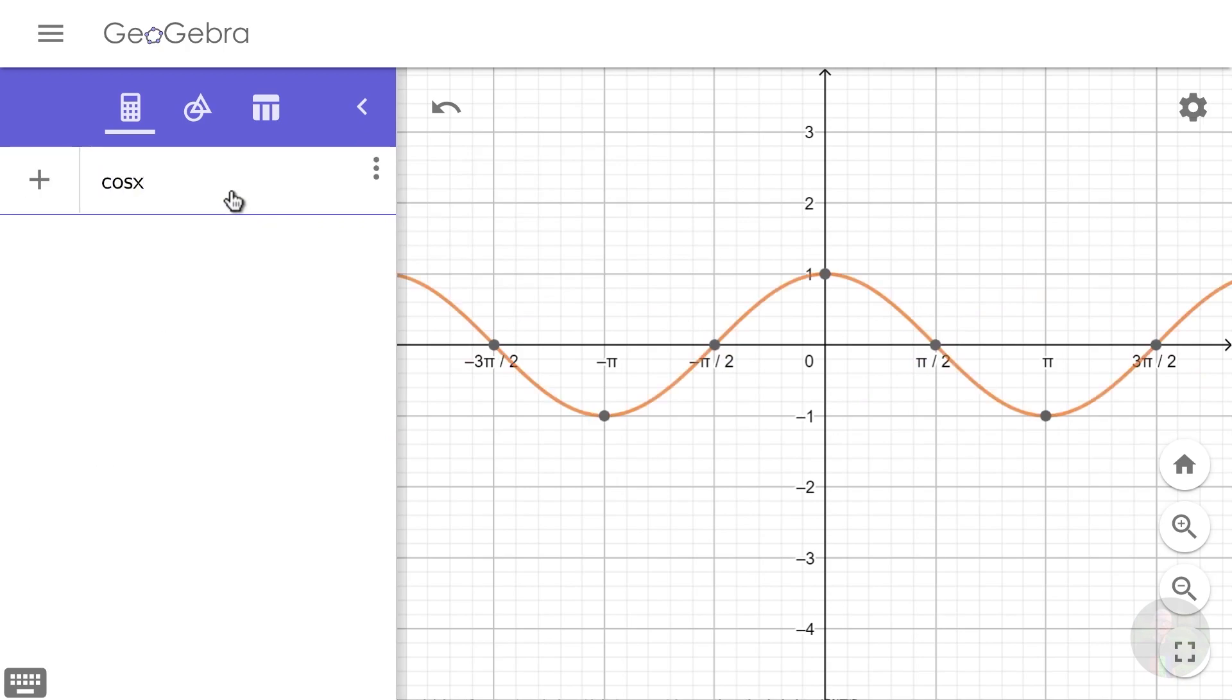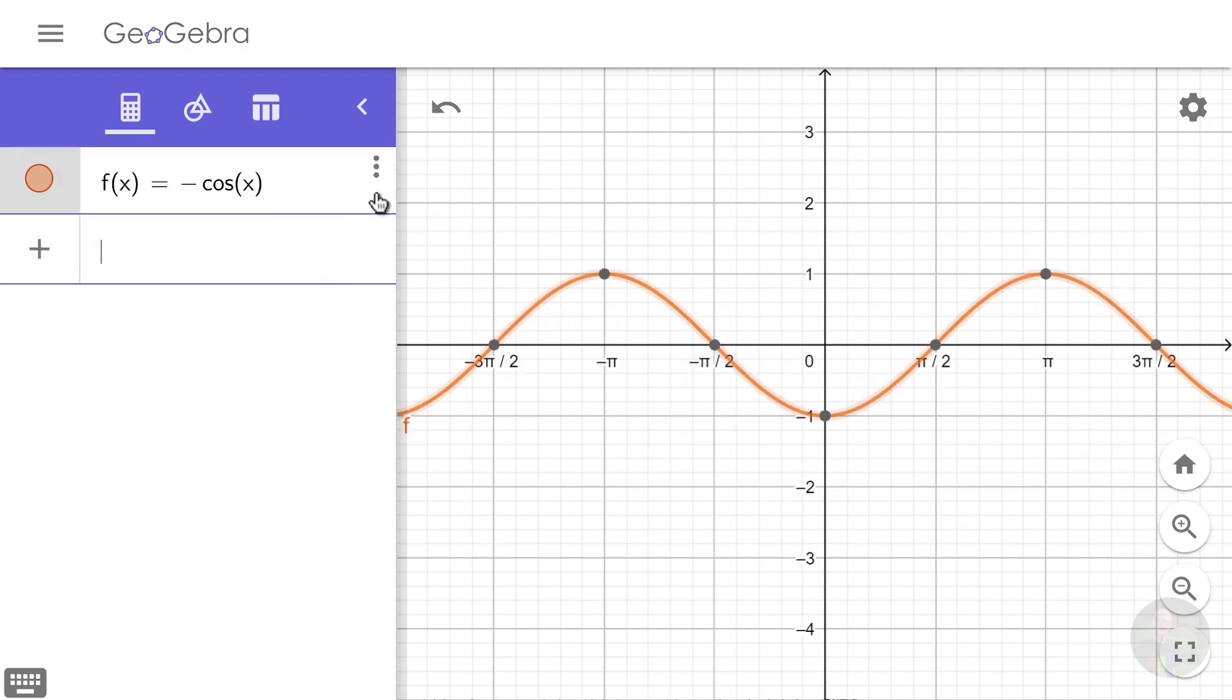Negative cos x is just cos x flipped, because the original 1 becomes negative 1, and the original negative 1 becomes 1, so it seems to be flipped. Okay, now lastly, let's try squaring the cosine function.